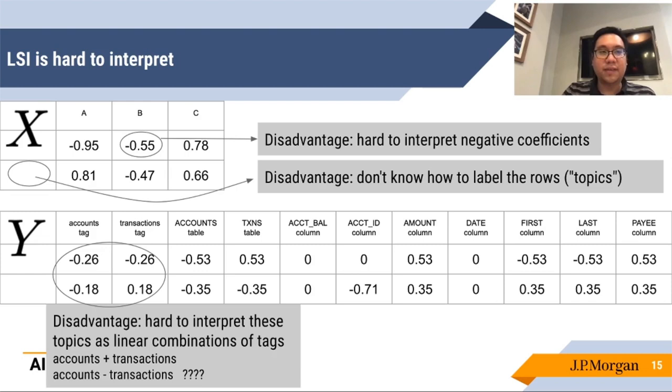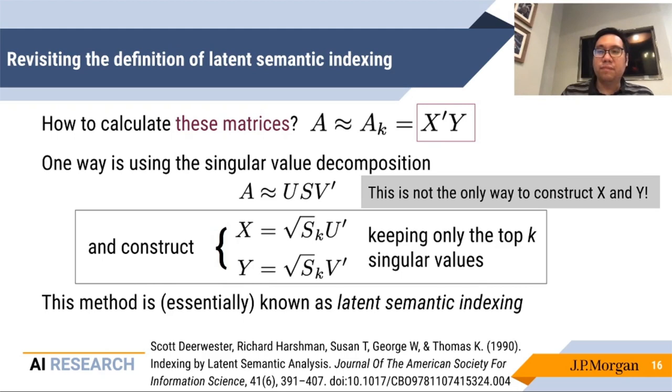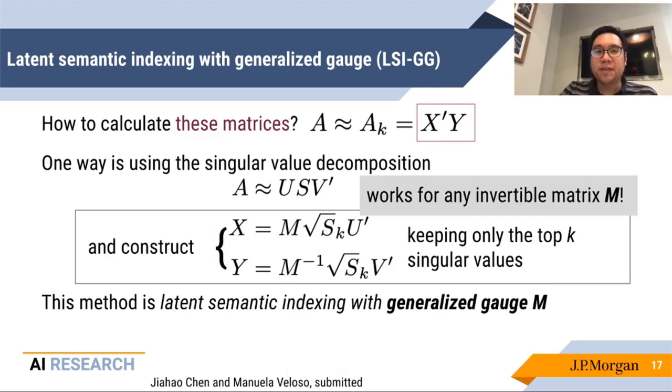Now, if we go back and look at the structure of how we've composed the matrix factorization, it turns out this is not the only way to construct some product of matrices x and y that reproduce the SVD. In particular, you can multiply x by any invertible matrix and y by its corresponding inverse. And this still gives you some way to represent the SVD. We call this the LSI with generalized gauge, where the matrix M is the gauge for the transformation. The name gauge comes from physics that we don't really need to worry about at this point.